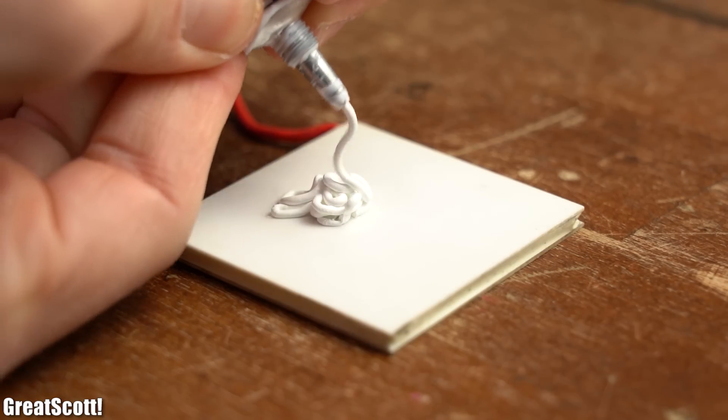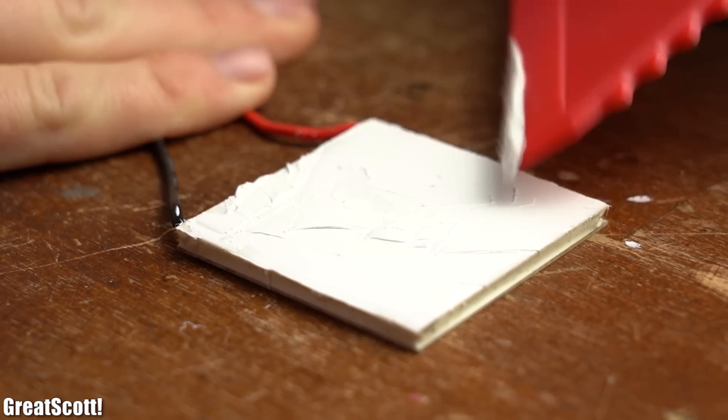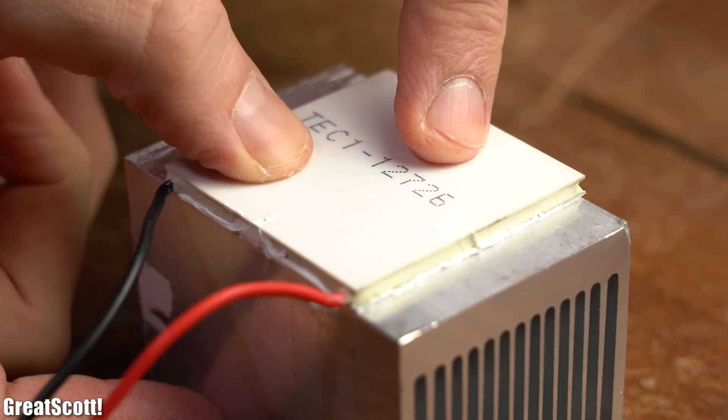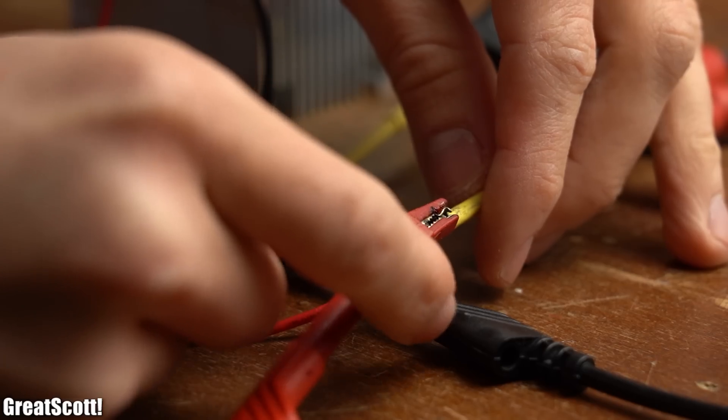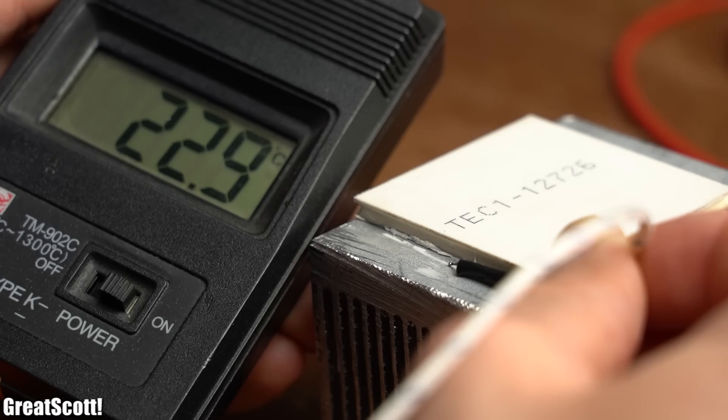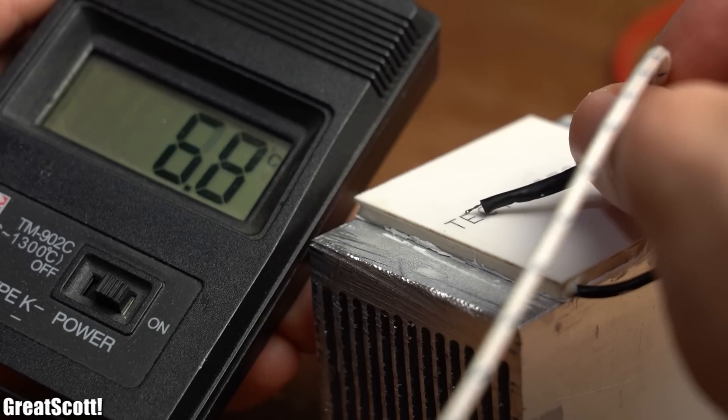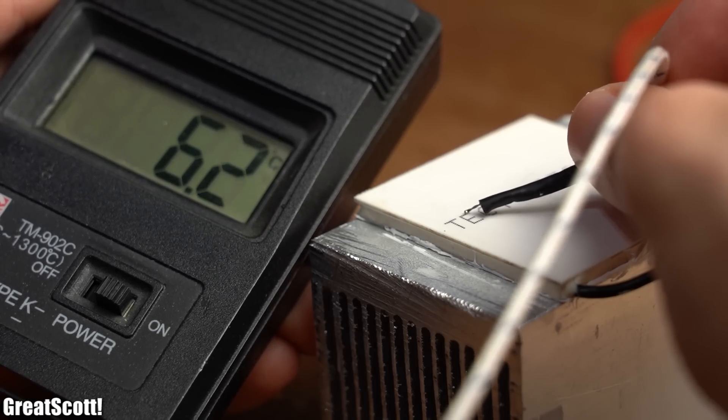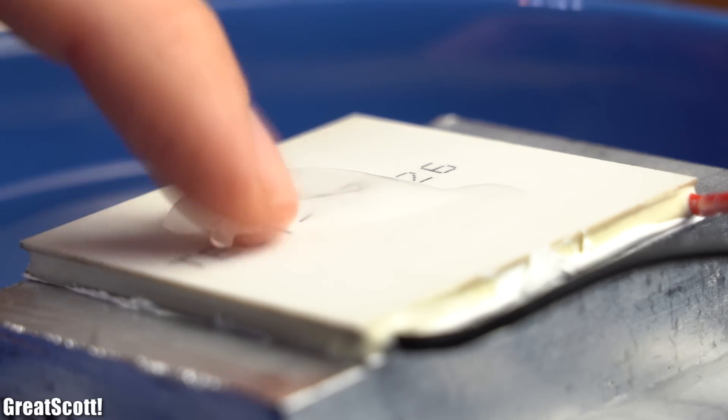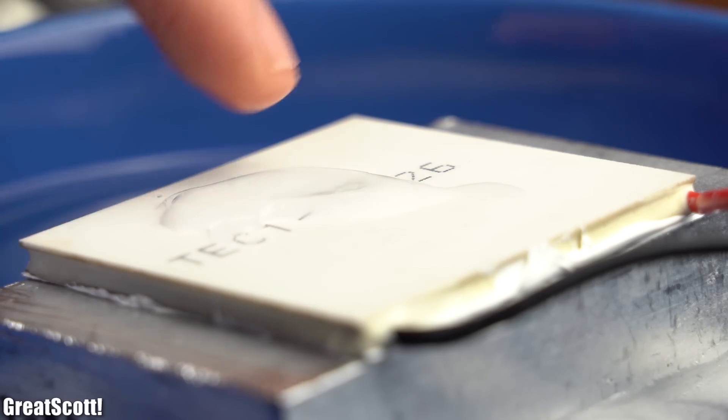By adding a bit of thermally conductive paste to the unlabeled side of the module, pushing it onto a heatsink and powering the module, the unlabeled side will get hot and thus slowly heat up the heatsink while the labeled side will get cold. The cold side can even reach temperatures underneath the freezing point of water.